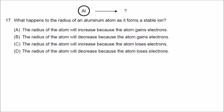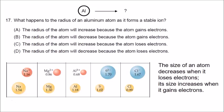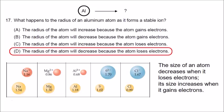Number seventeen: what happens to the radius of an aluminum atom as it forms a stable ion? Aluminum is a metal — it loses electrons and forms a +3 charge. When an atom loses electrons, its size decreases; when an atom gains electrons, its size increases. So aluminum gets smaller because it loses electrons. Correct answer is D.